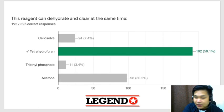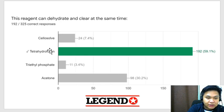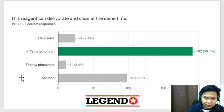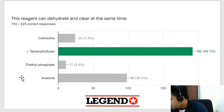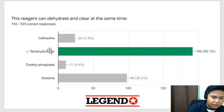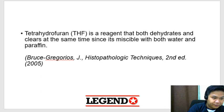What reagent can dehydrate and clear at the same time? The answer is THF — tetrahydrofuran. For the histopath boards, take note of reagents with double purposes. Write them on a card and memorize them — these are favorites of board examiners. So dehydrates and clears at the same time: tetrahydrofuran.